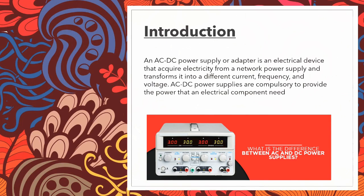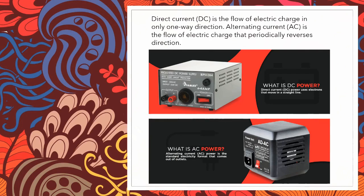What is the difference between AC and DC power supplies? DC stands for direct current, which is the flow of electric charge in only one direction, while alternating current, which is AC, is the flow of electric charge that periodically reverses direction.